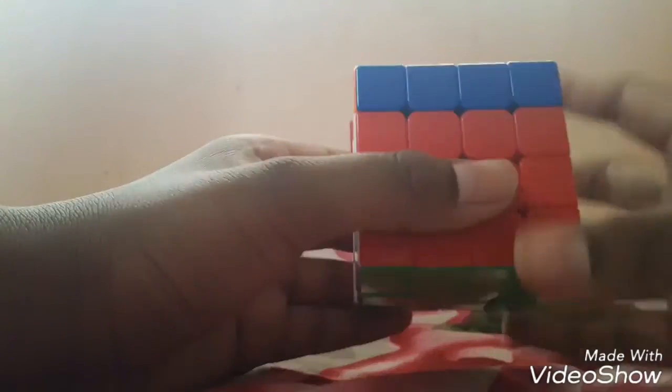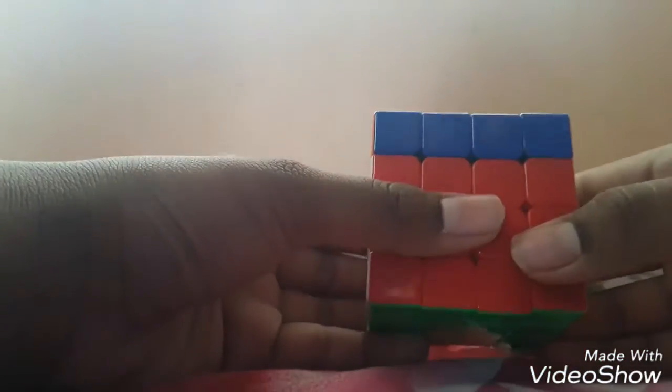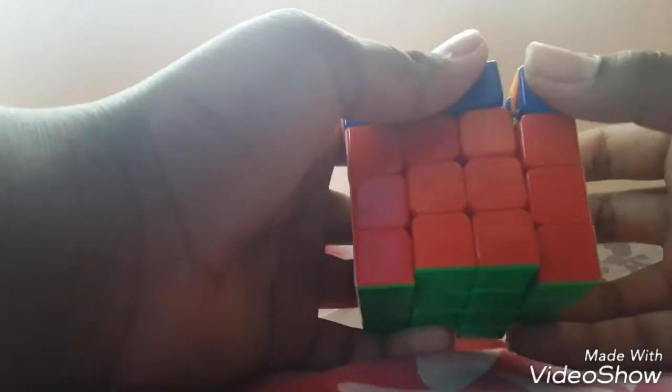Before doing the algorithm I'll teach you what the notation is. Capital R is the outer layer, lowercase r is the inner layer. Any alphabet which we are using for Rubik's cubes - capital letters will be outer layers and lowercase letters will be inner layers.